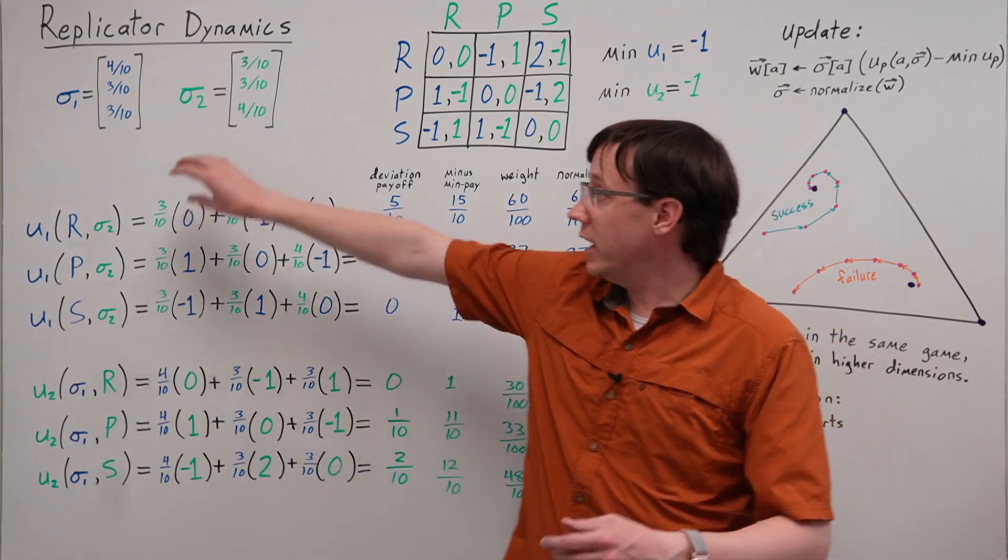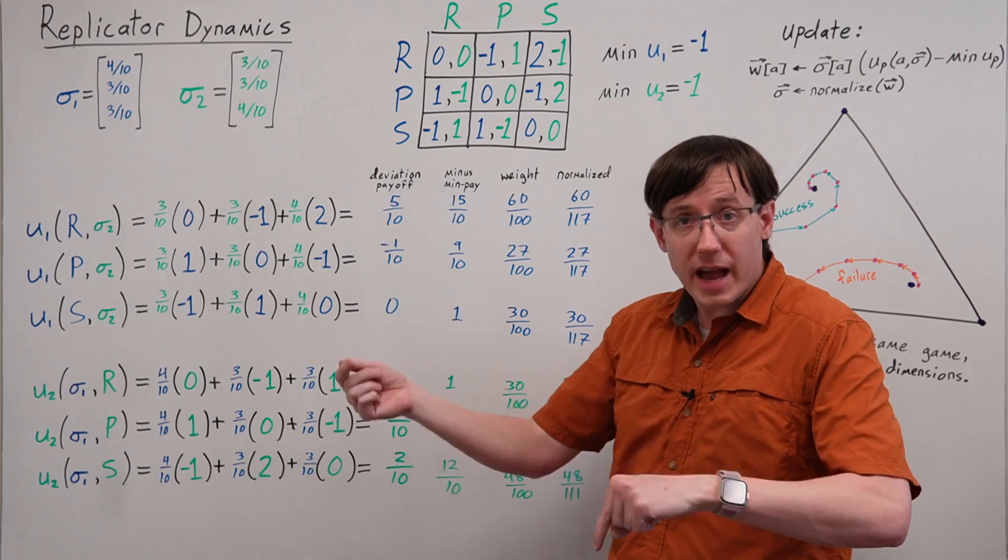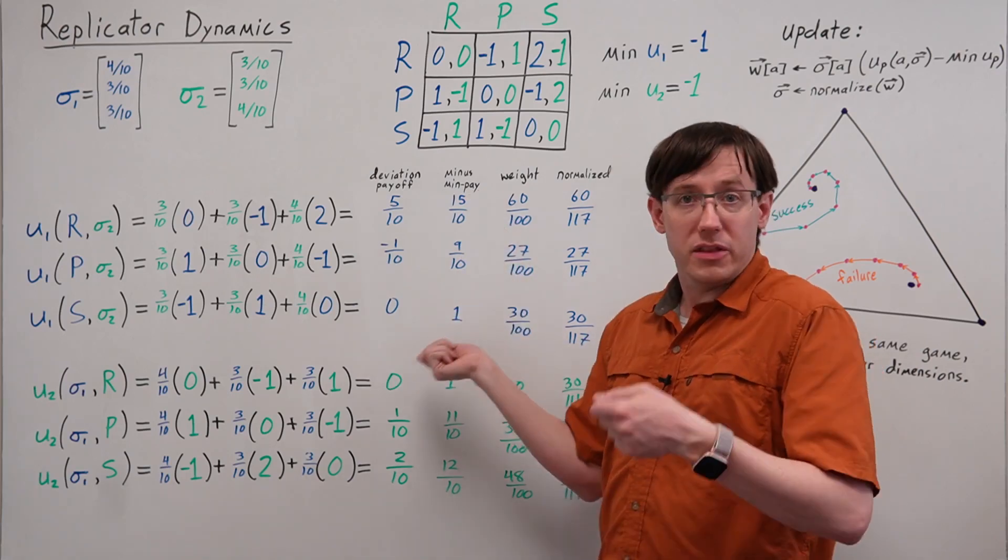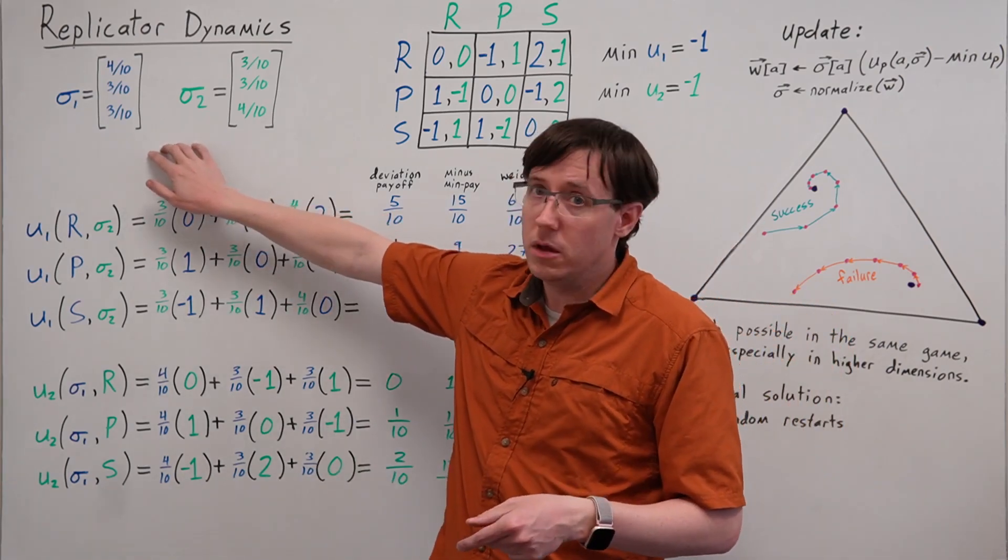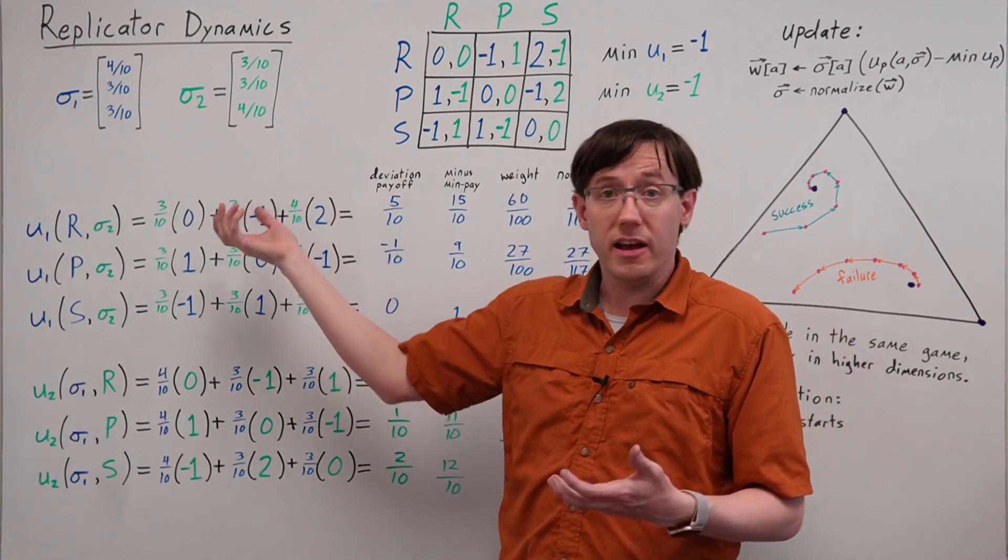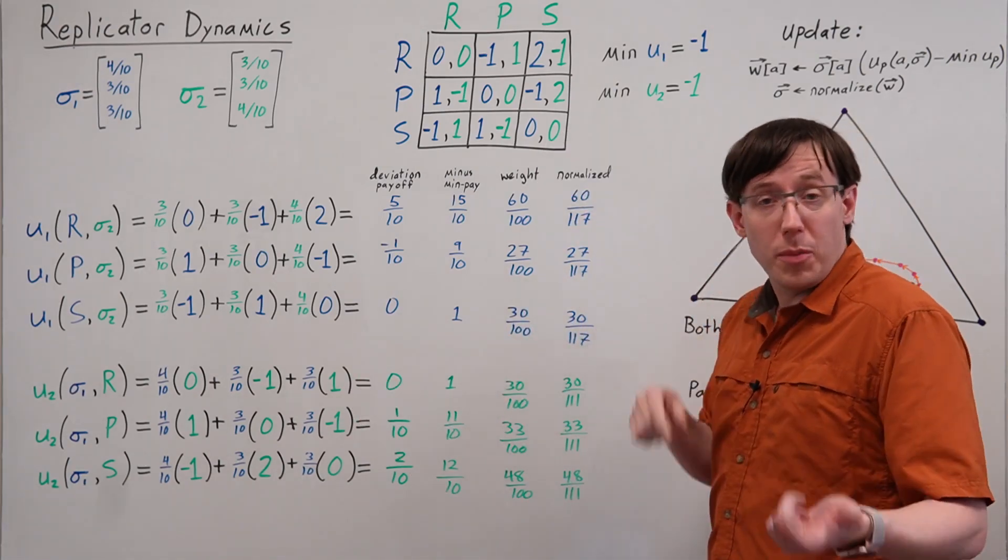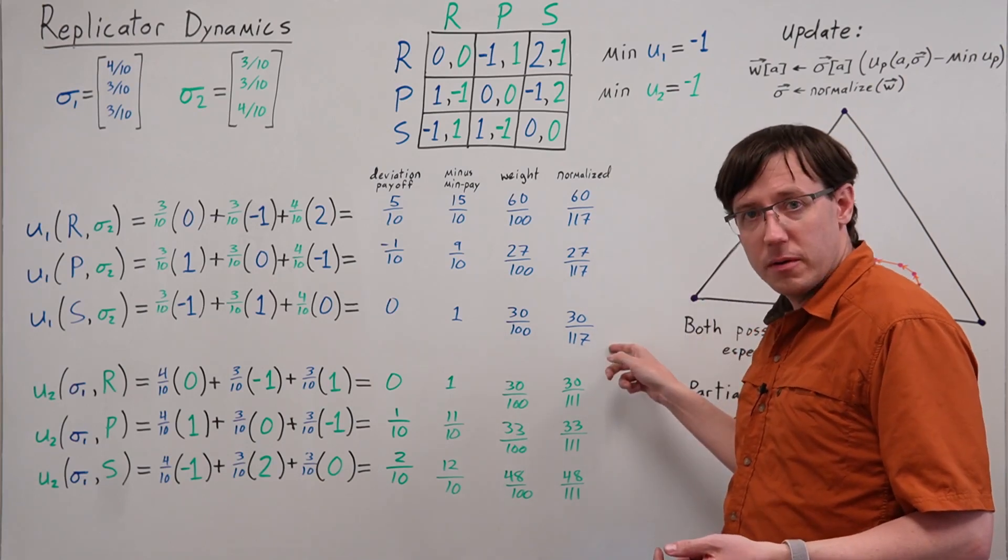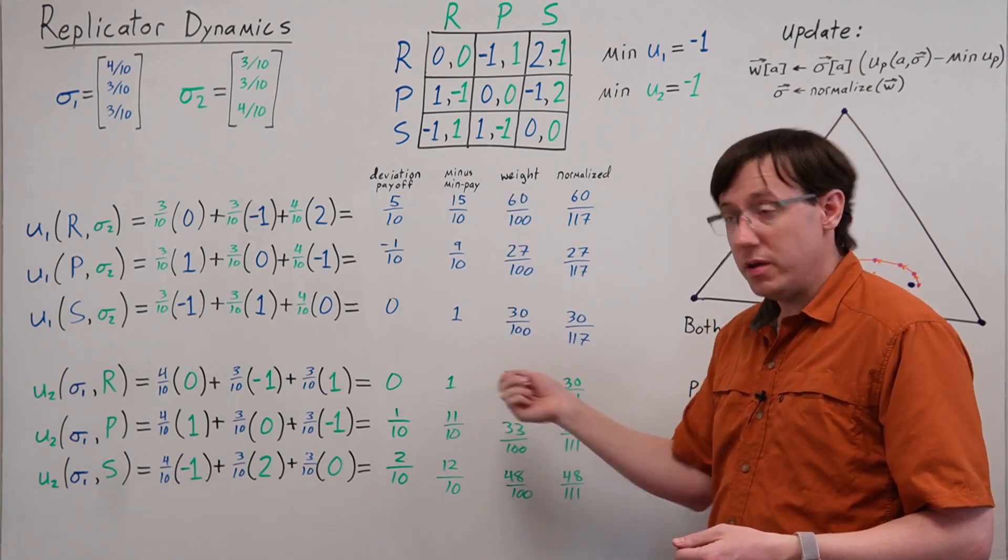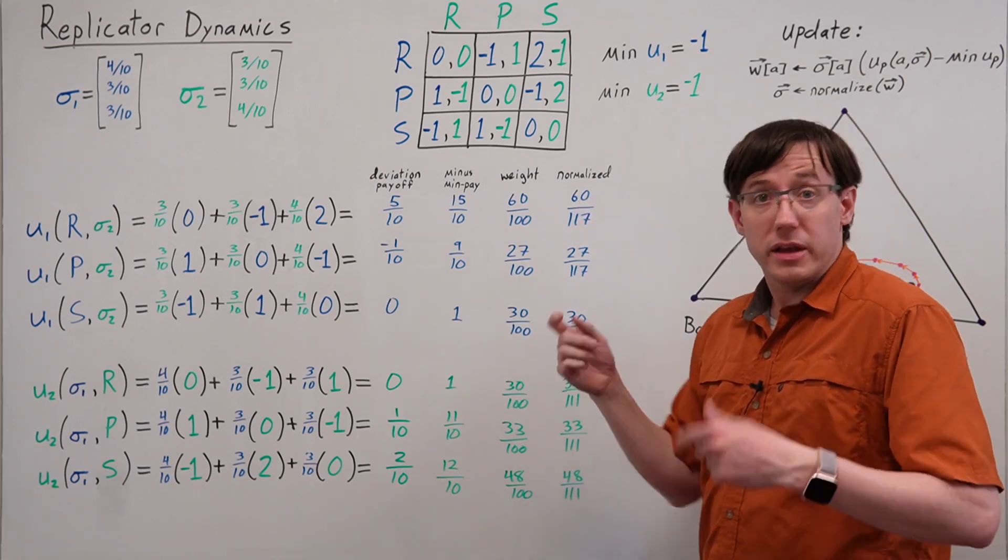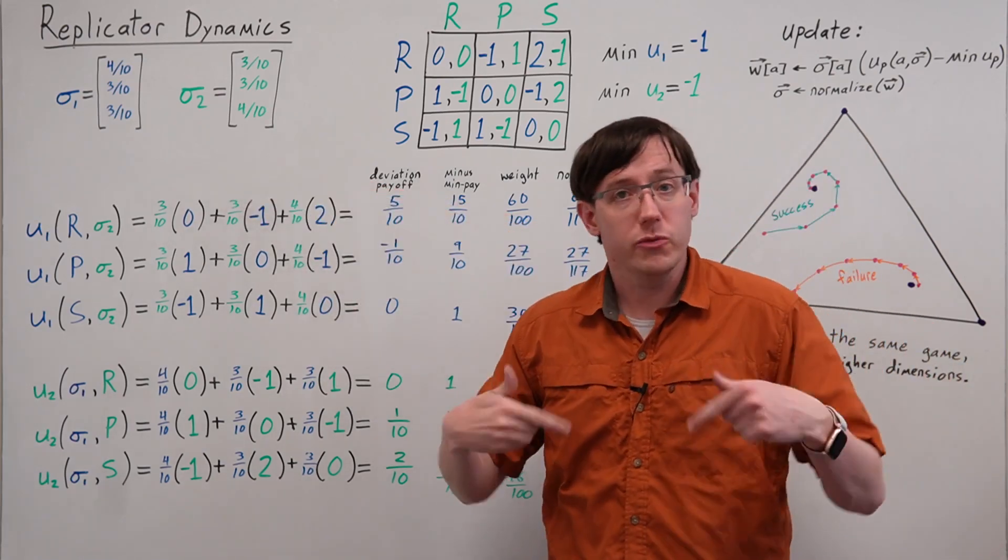Then we will multiply the probabilities by the adjusted deviation payoffs. Meaning that for all of the actions being played, they'll be multiplied by the same thing. For all of the actions not being played, they have probability zero, so no matter what we multiply them by, they will still have probability zero. When we perform the normalization, we will divide all of the probabilities by the same amount. Meaning that for all of the non-zero probabilities, we will have multiplied them by the same amount and then divided them by the same amount, getting us back to exactly where we started. So a Nash equilibrium is a fixed point of this Replicator Dynamics update.